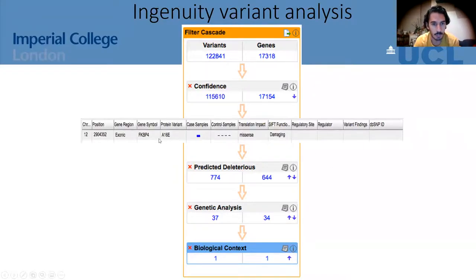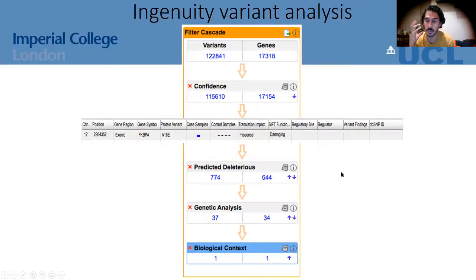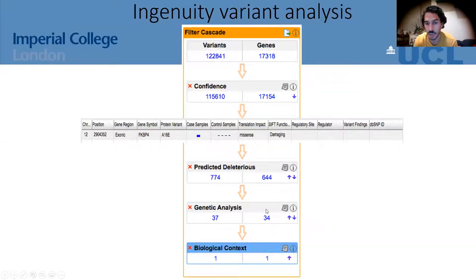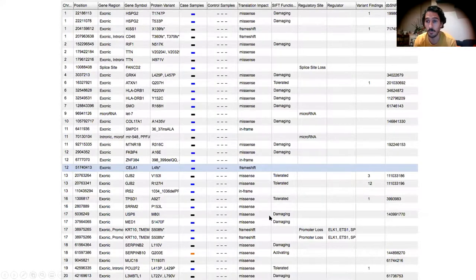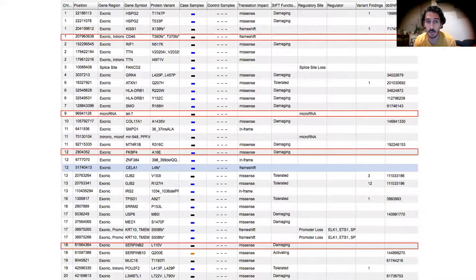This came down to one variant in one gene: FKBP4 — an alanine to glutamic acid change — present in the patient but not in the controls, predicted to be damaging. However, this was biased because the software linked this gene to a mouse phenotype where female knockout mice are infertile. We couldn't exclude the other 34 genes just because they hadn't been linked to the disease before, so we examined the full table and identified three more interesting candidate genes.